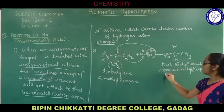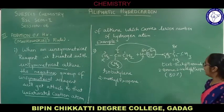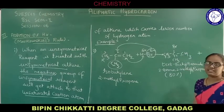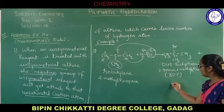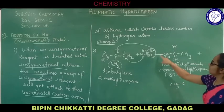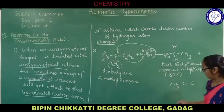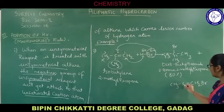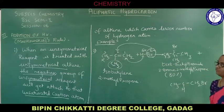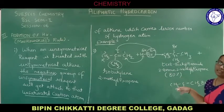This is considered to be the 80% major product. The minor product will be there in such a way that it is the reverse — the negative terminal goes and gets attached to carbon number one, whereas hydrogen goes and gets attached to carbon number two. Whatever product has been formed in Markovnikov's rule, exactly the reverse is the minor product.